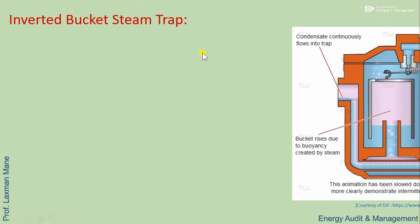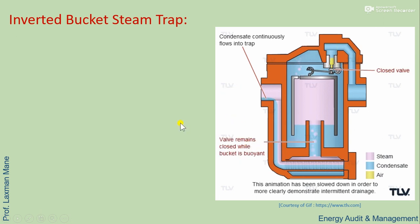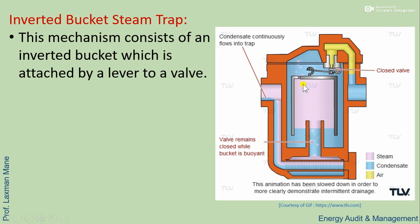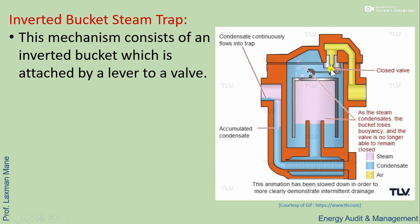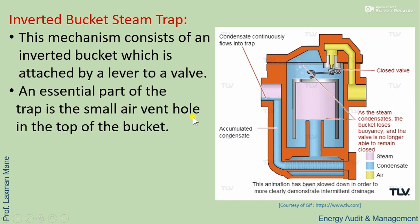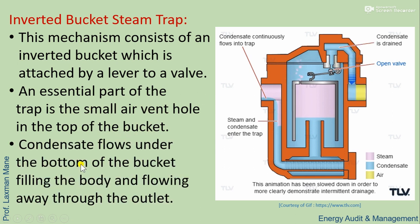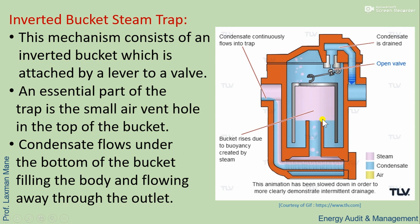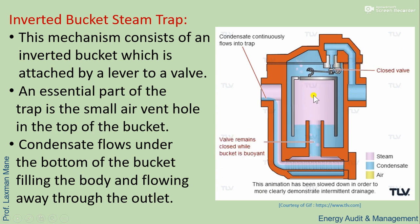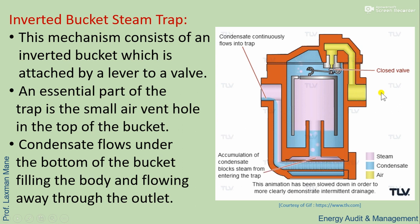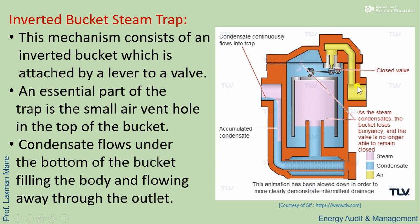The inverted bucket steam trap: this mechanism consists of an inverted bucket attached by a lever to a valve. An essential part of the trap is a small air vent hole in the top of the bucket. Condensate flows under the bottom of the bucket, filling the body and flowing away through the outlet. The condensate rises, moving the bucket up and opening the valve, removing air and non-condensable gases. As the gases are removed, the bucket moves down and the valve closes.